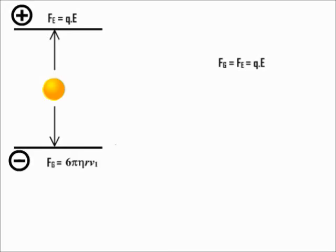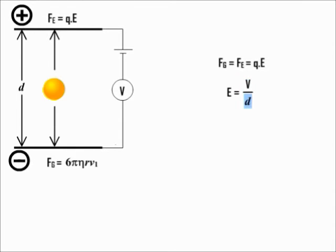In that case, Fg = Fe = Q·E. Now E = V/D, where V is the voltage applied across the plates and D is the distance of separation between the plates. This implies Q = Fg·D/V. All the quantities over here are known, so Q can be calculated.